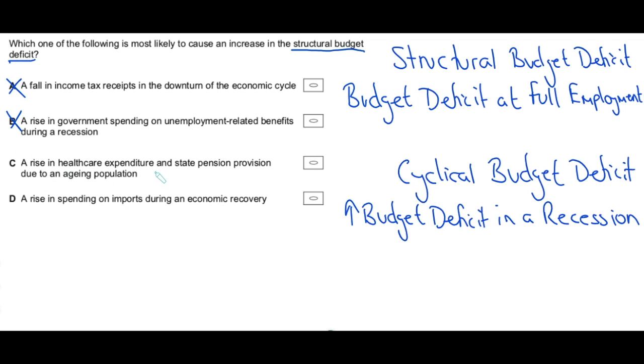A rise in healthcare expenditure and state pension provision due to an aging population. Well that is going to happen at full employment at any point in the economic cycle, right? That's a constant factor that's going to lead to a budget deficit. That's not recession specific, so that could well be the correct answer. C, what's D saying? A rise in spending on imports during an economic recovery.